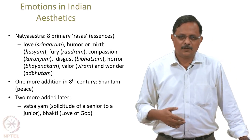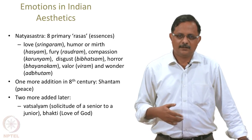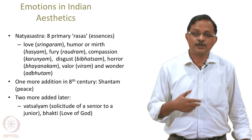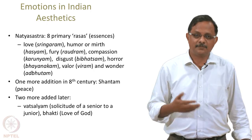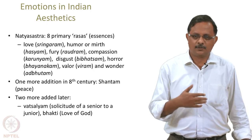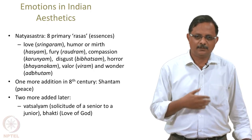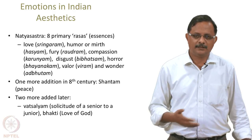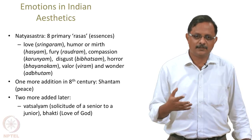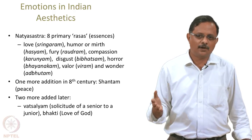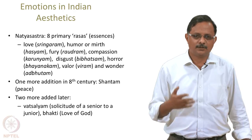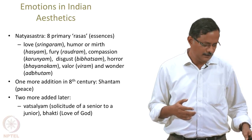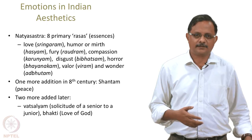At a later point, around the 8th century, another emotion was added — shantam, or peace. Subsequently, two more were added: vatsalyam, which is the love or solicitude that a senior person like a teacher has towards a junior like a disciple or student; and bhakti, which is the same love directed towards God. So we have a list of 11 emotions in Indian aesthetics.